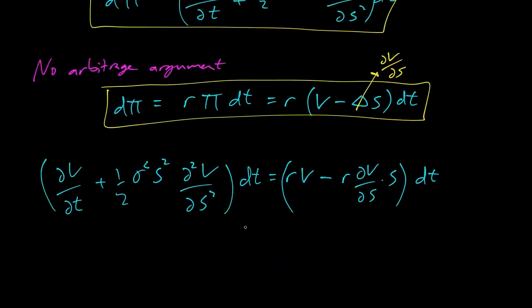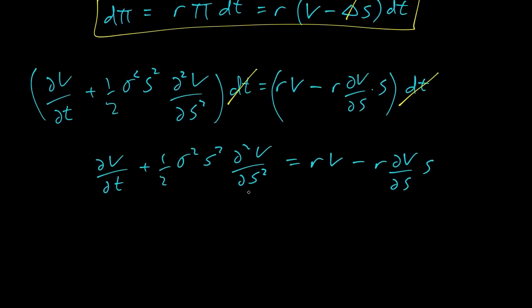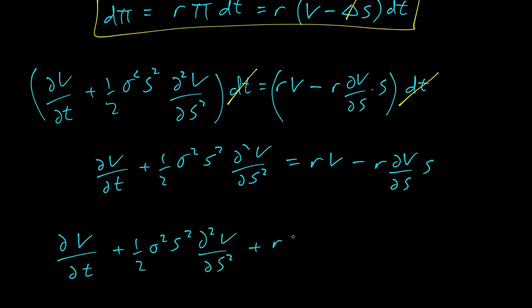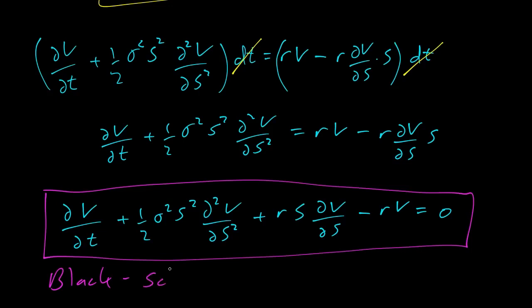Dividing both sides by dt — using some physics math, mathematicians hate this, but it works — and moving everything to the left-hand side, we get: partial of V with respect to t, plus one-half sigma squared S squared second partial with respect to S, plus r S partial of V with respect to S, minus r V equals zero. And there it is — the Black-Scholes equation. Pretty cool.